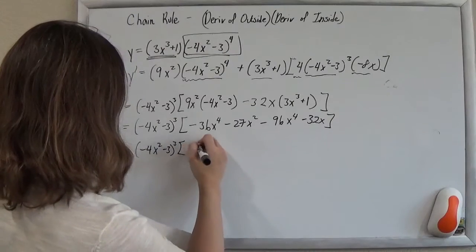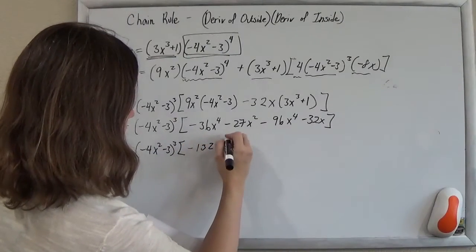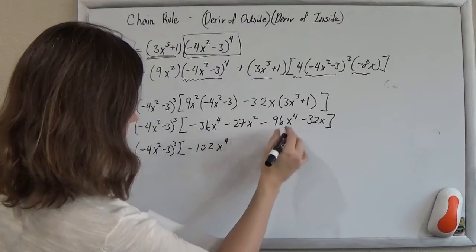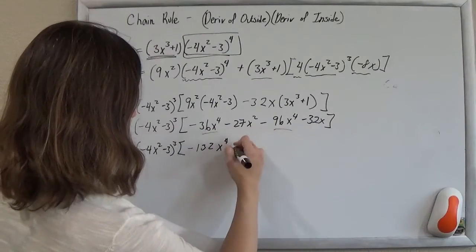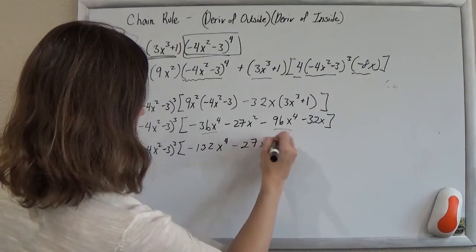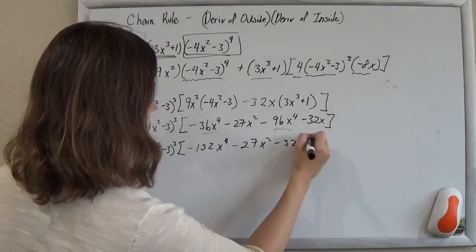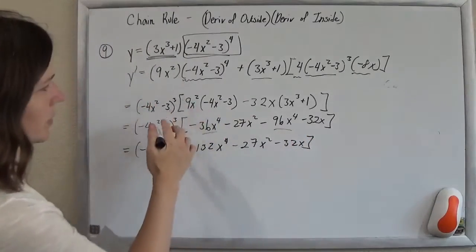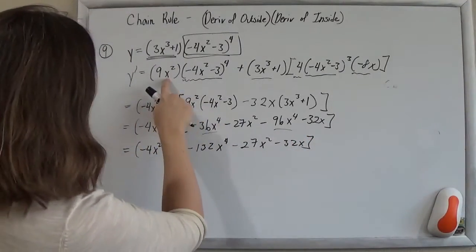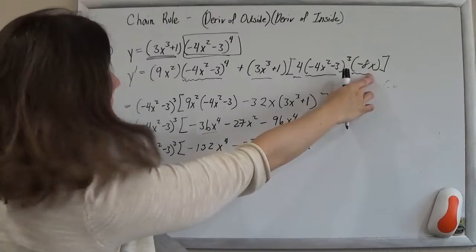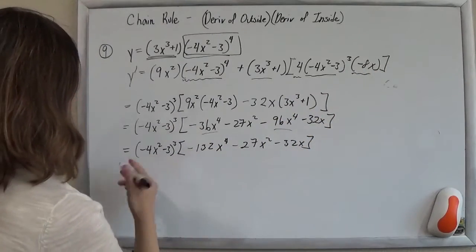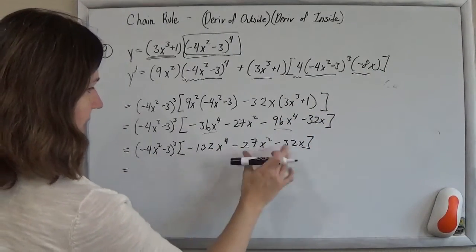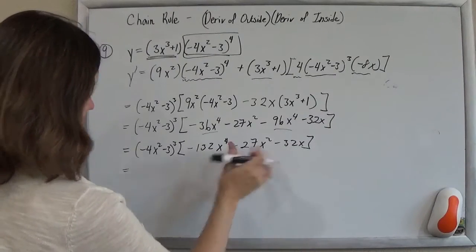So I'm getting minus 132x to the fourth and then minus 27x squared minus 32x. And what I didn't notice and I could have pulled out from the beginning is that each one of them has at least an x in them, so I could have pulled out an x from the start. But since I lost it, I noticed that, hey, I can factor this more. I'm going to pull out an x now.